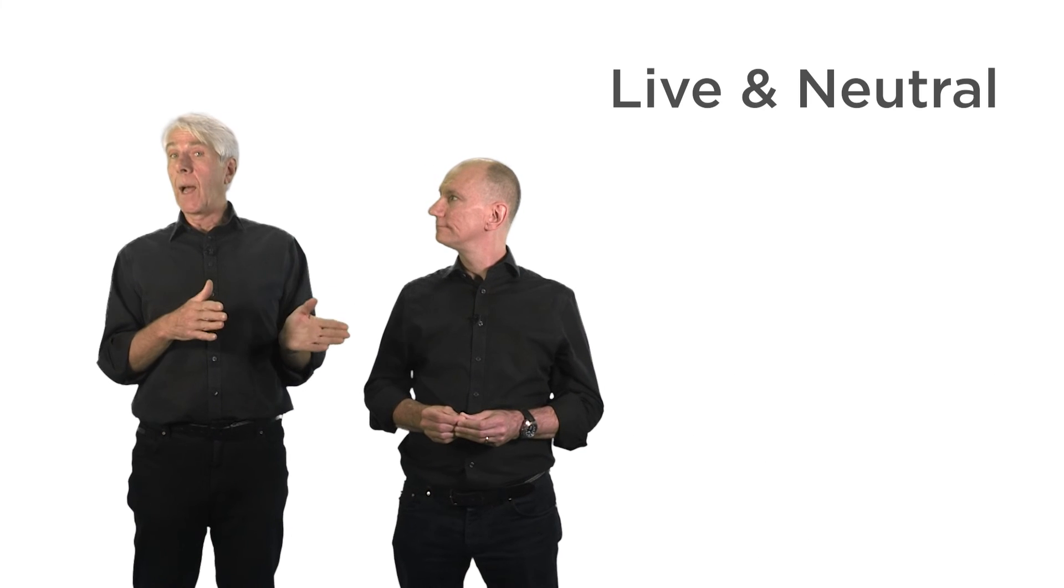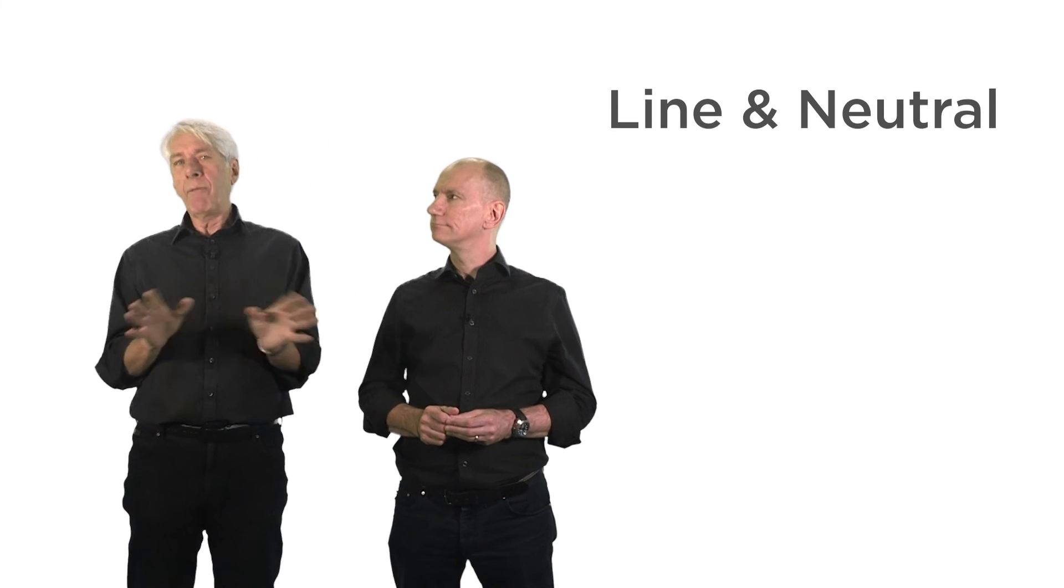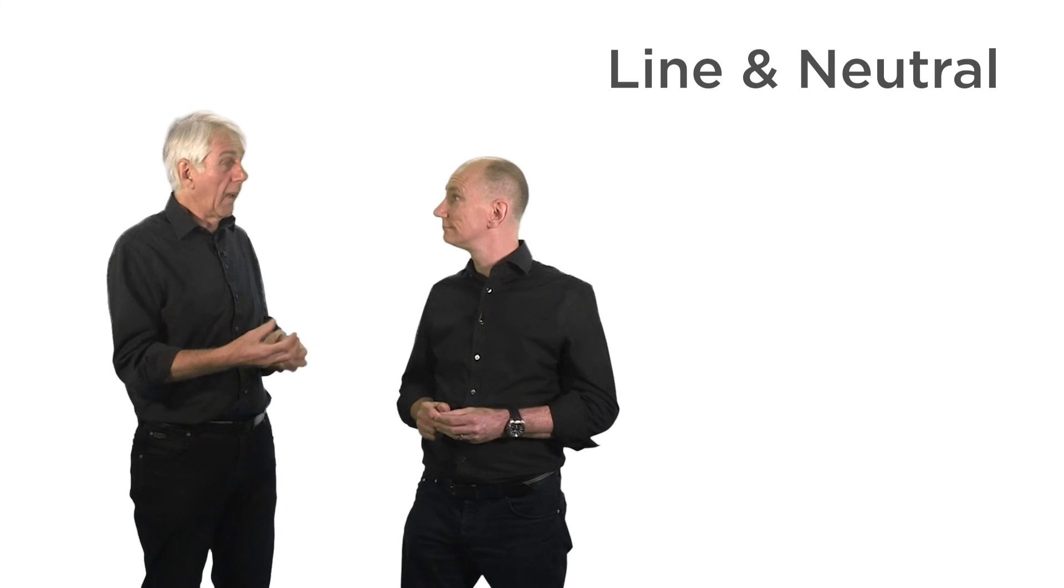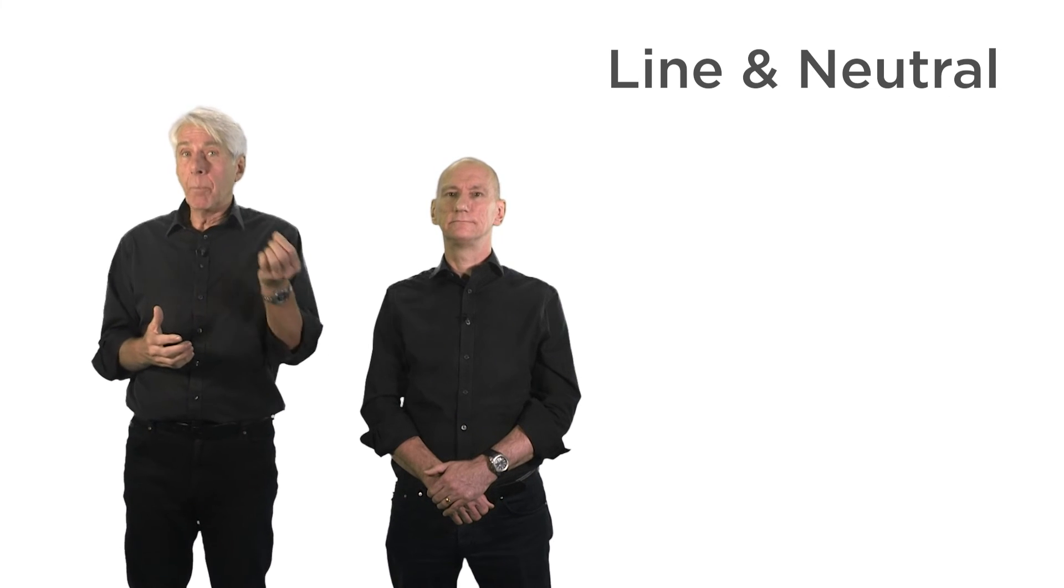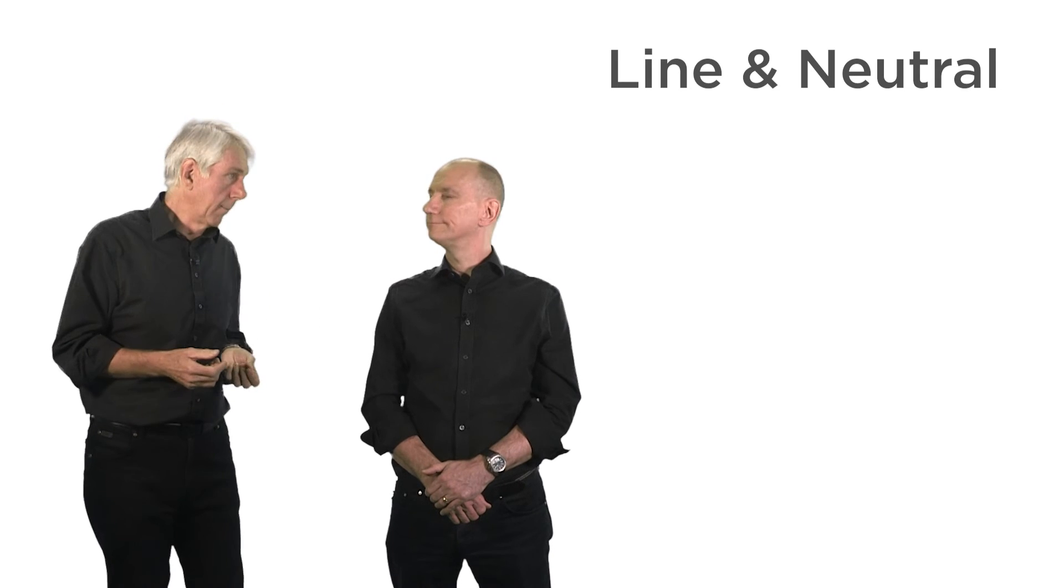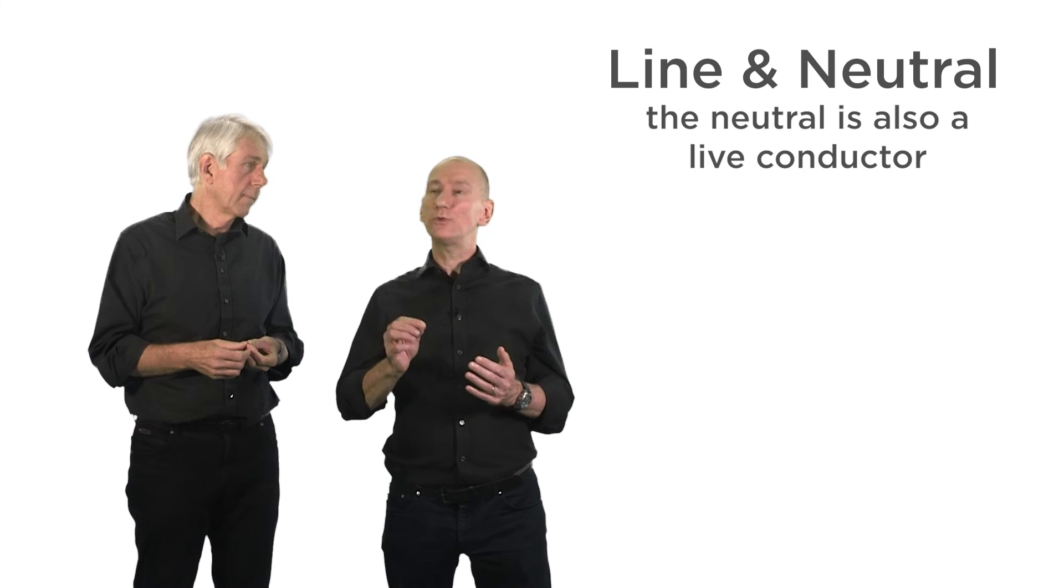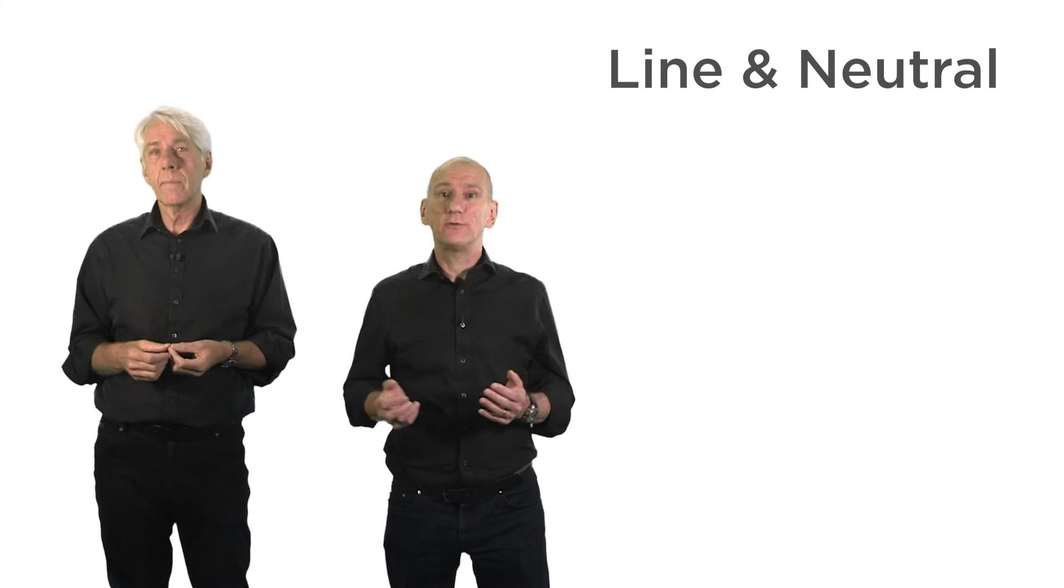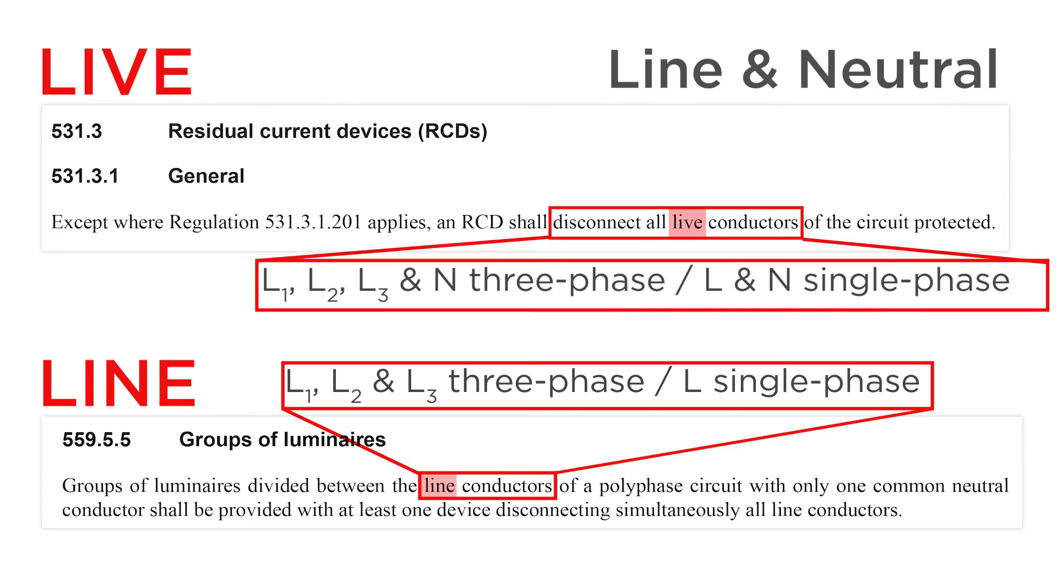The next term is live and neutral where the correct term is in fact line and neutral. Now I think we should cut everyone some slack here as the Regs only introduced the word live about 100 years ago or so. But joking aside, over the years references to L have changed to P for phase and now is currently L again. Yes that's true but at least it's logical. The reason is that neutral is also defined as a live conductor. So that helps us avoid ambiguity, especially when a regulation states for example all live conductors must be disconnected from the supply. That means all lines and the neutral of a three phase supply, and in the case of a single phase supply that's L and N.